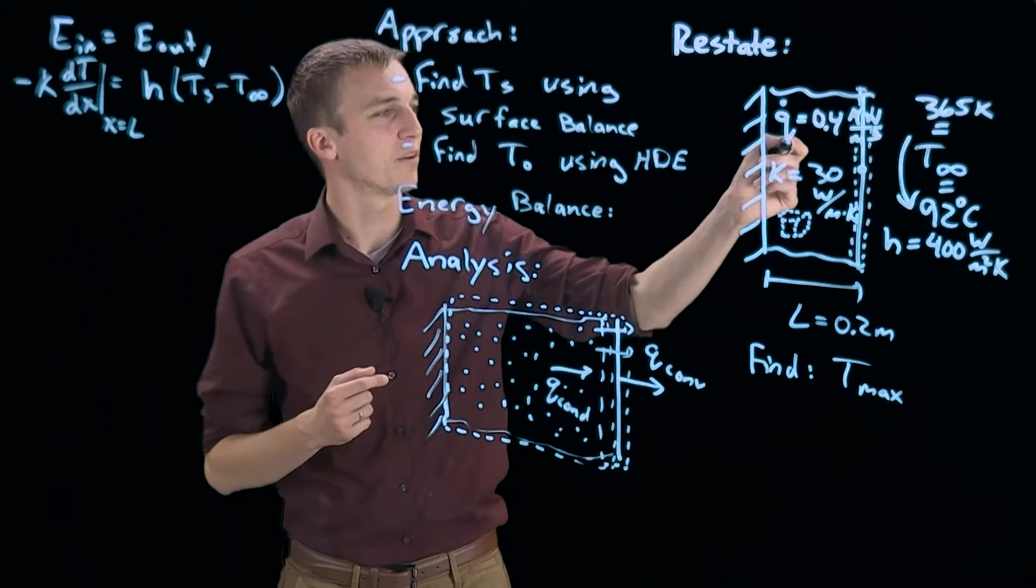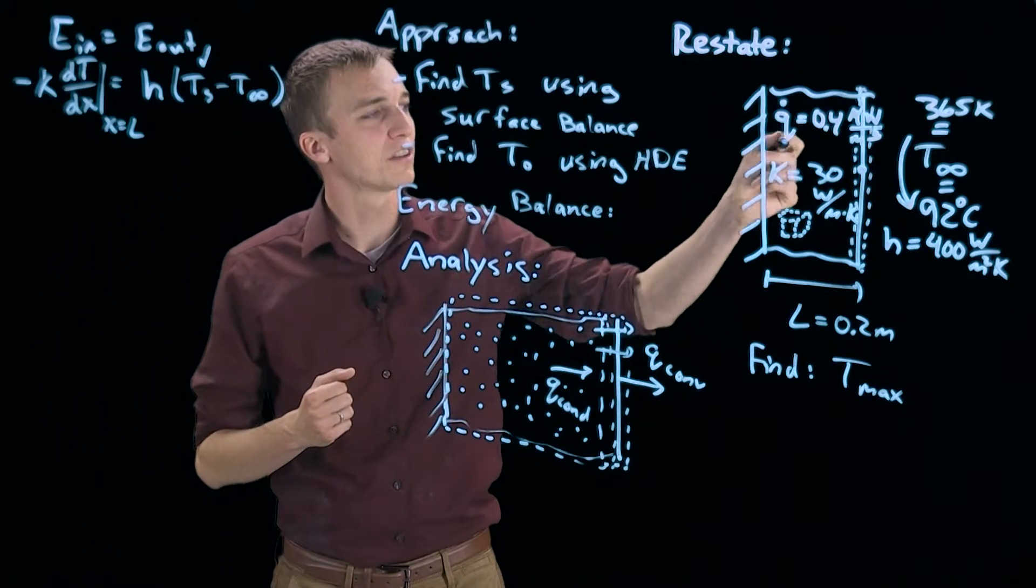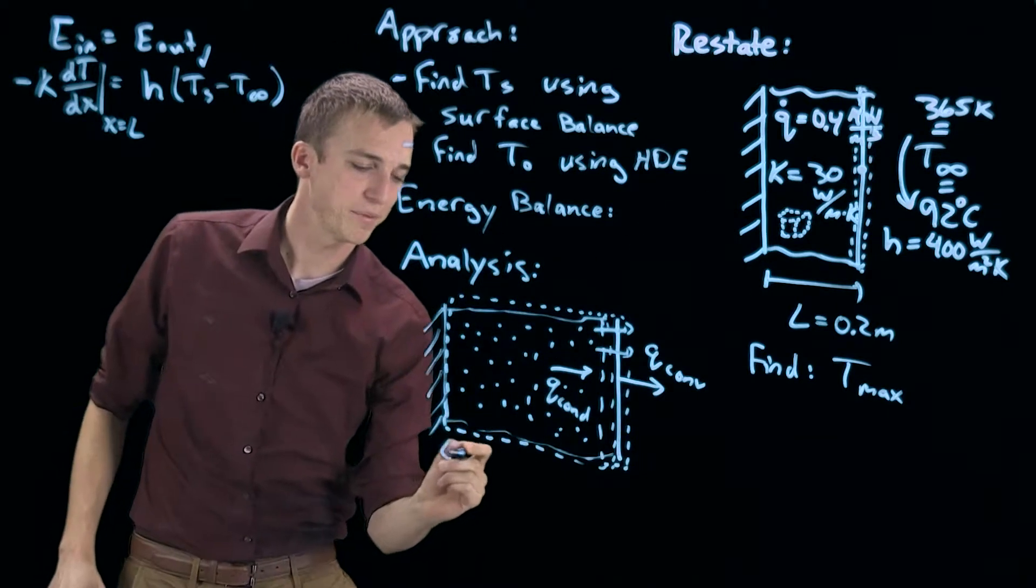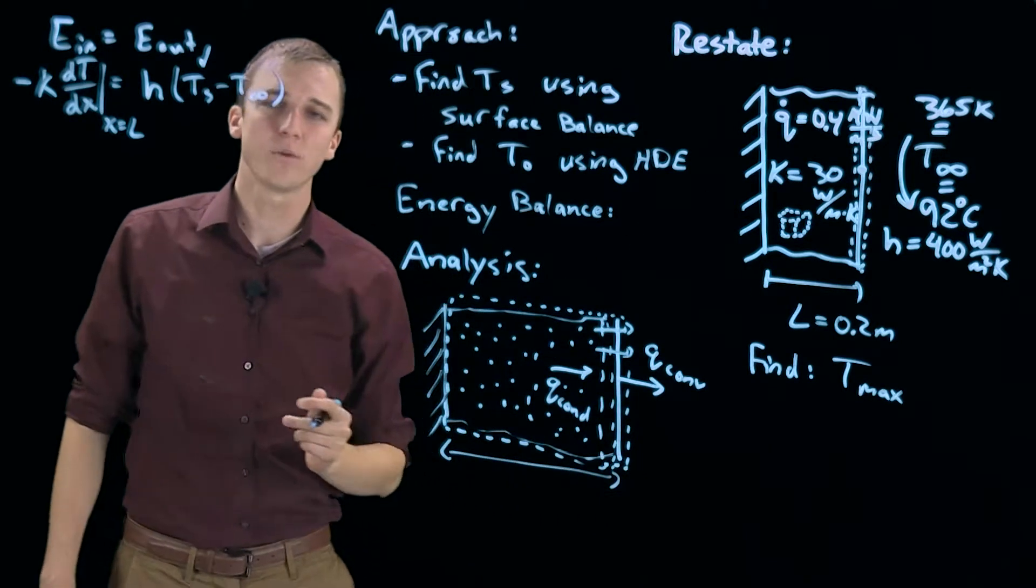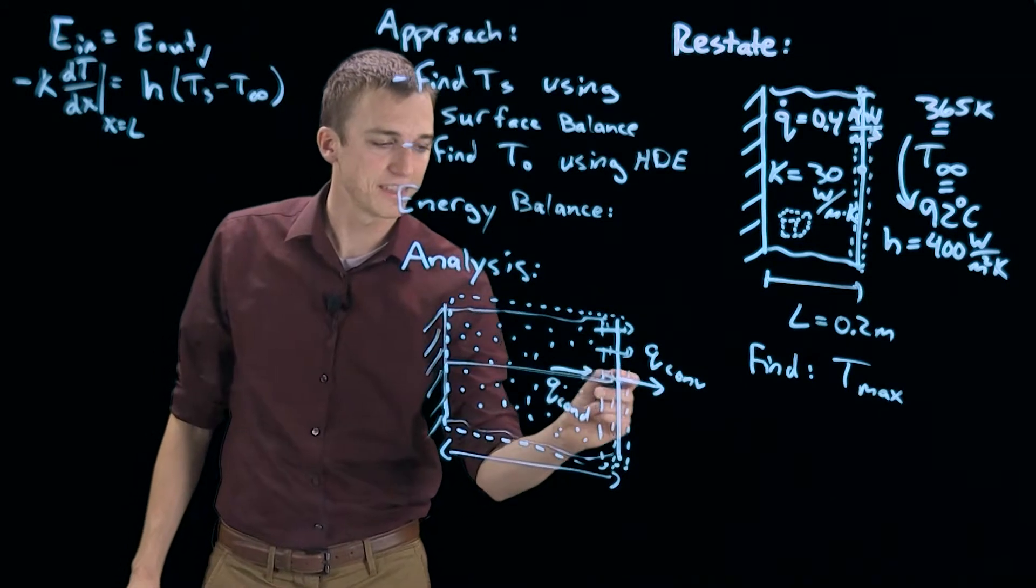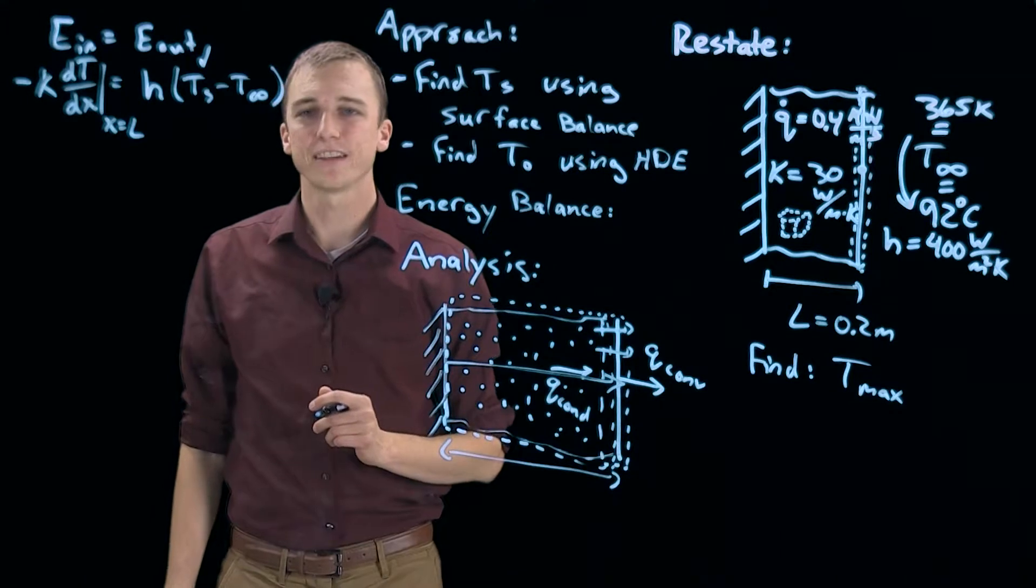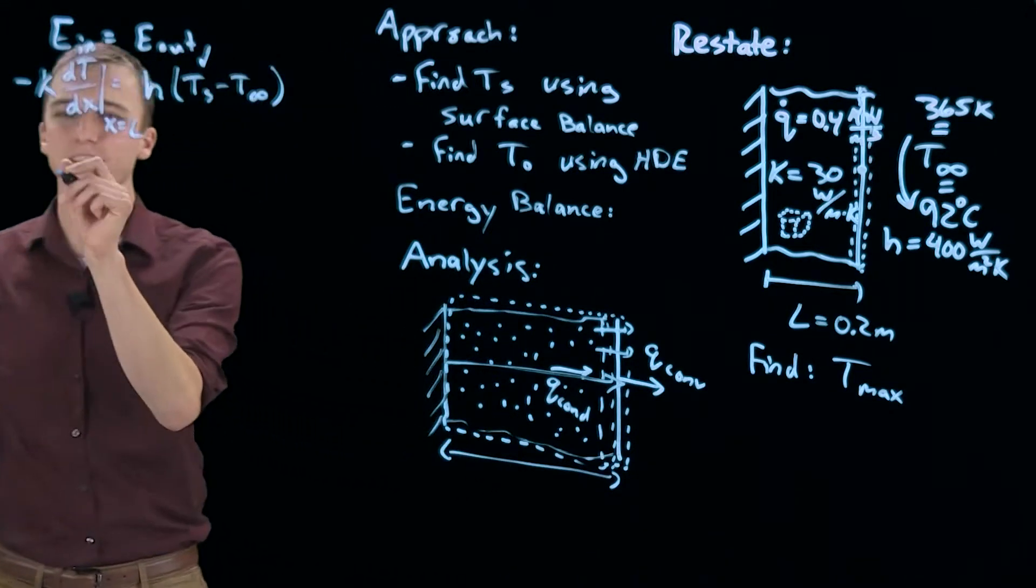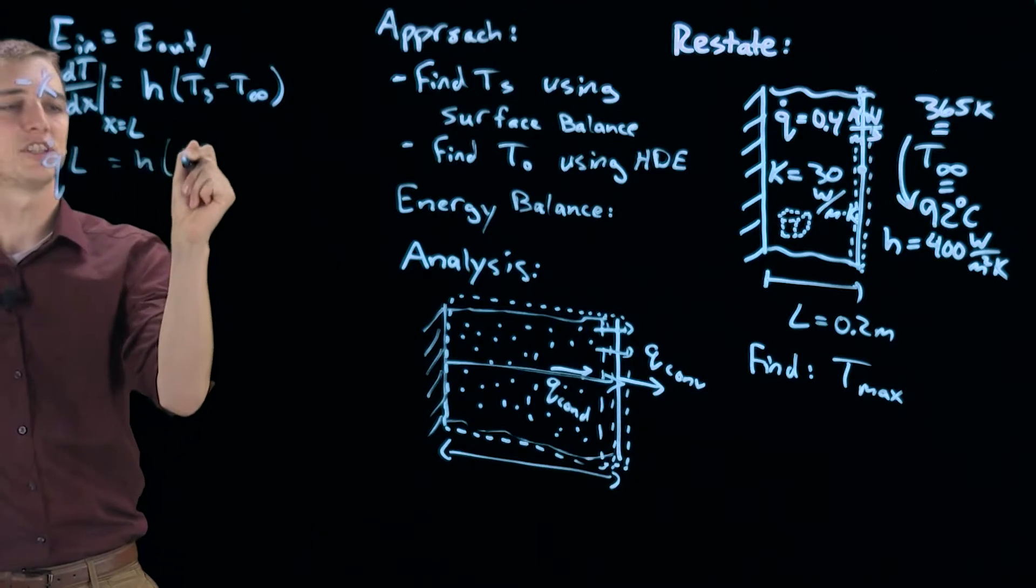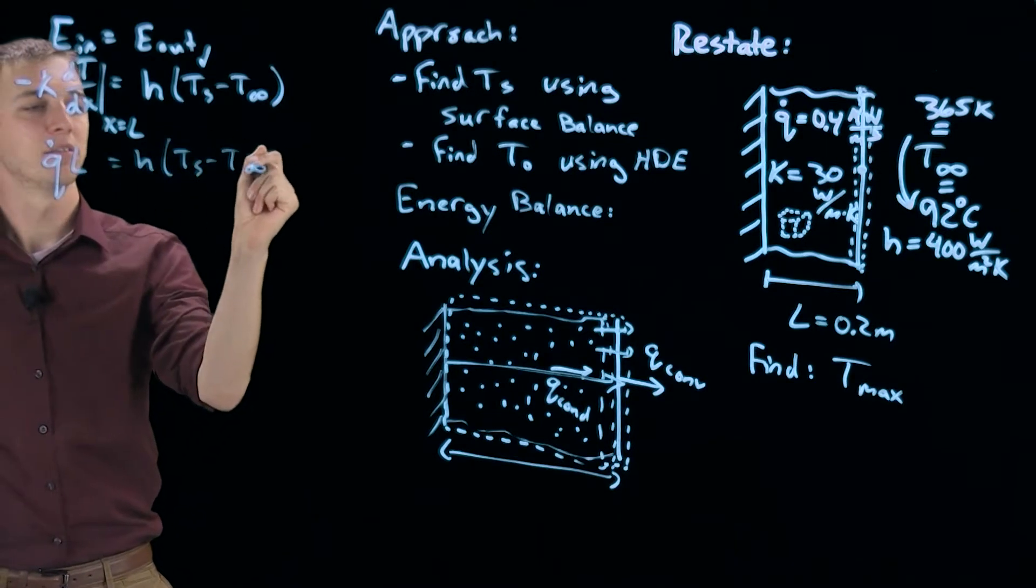Well we actually can calculate that. We know that we know q dot, which is our volumetric heat generation rate. By simply multiplying that by the length of our wall, we find the amount of energy generated along this line that must then exit out that surface. So that is simply written as q dot l equals h Ts minus T infinity.